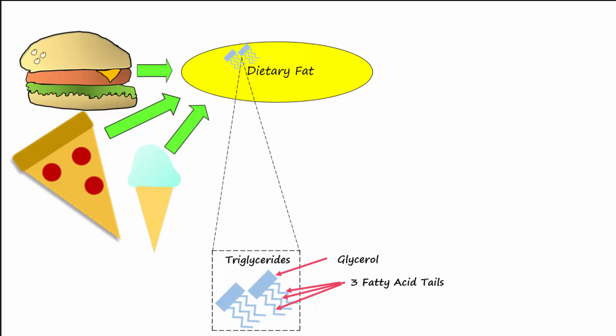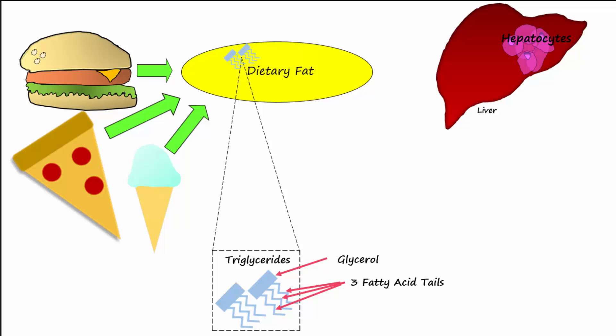Once the fat from the diet reaches the small intestines, the hepatocytes of the liver come into play, producing fluid made up of bile salts that passes into the duodenum and attaches to fat.